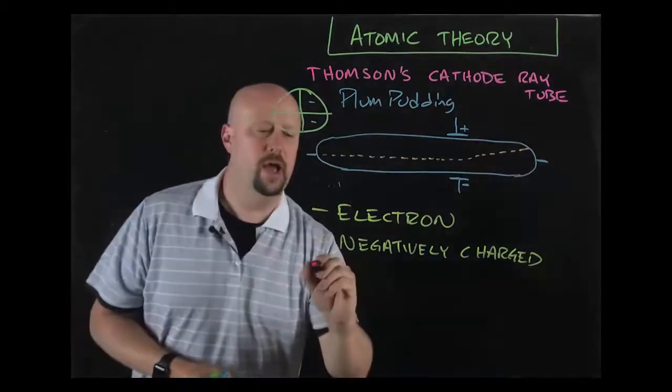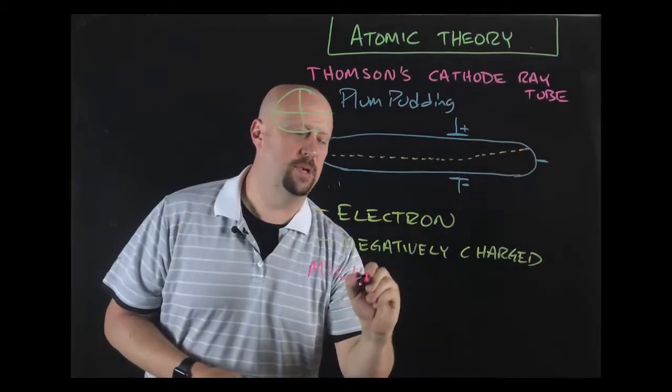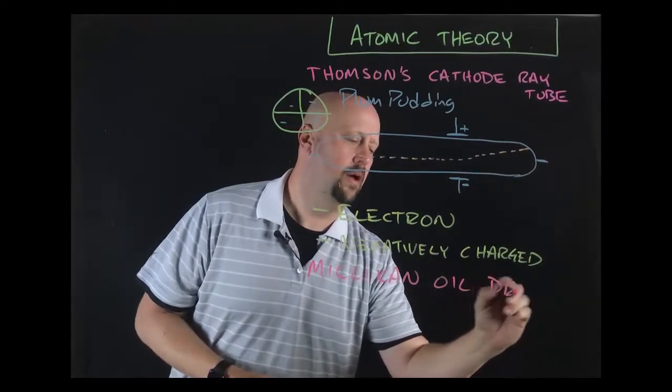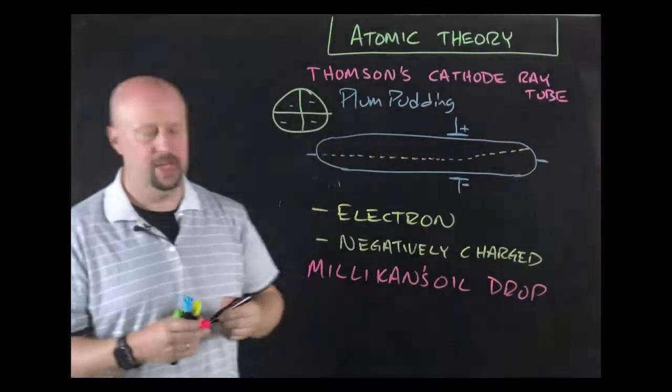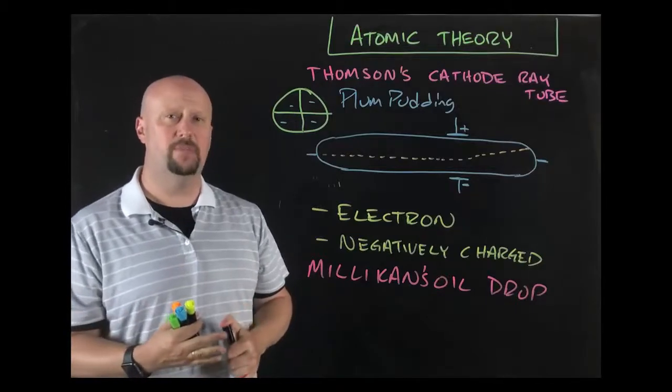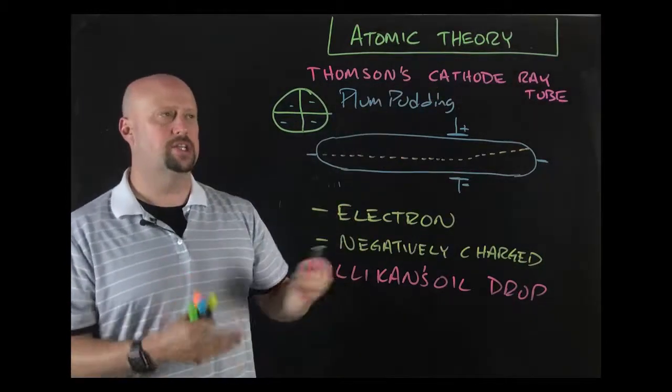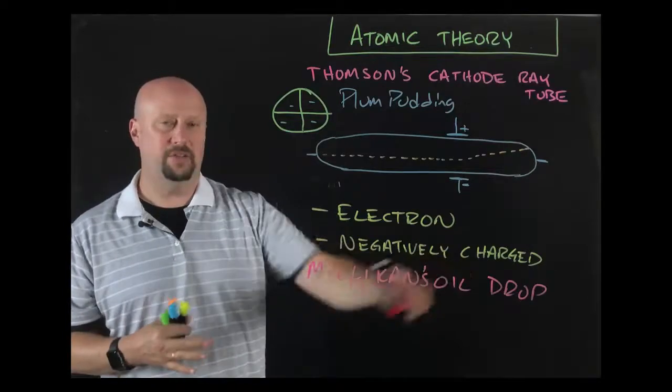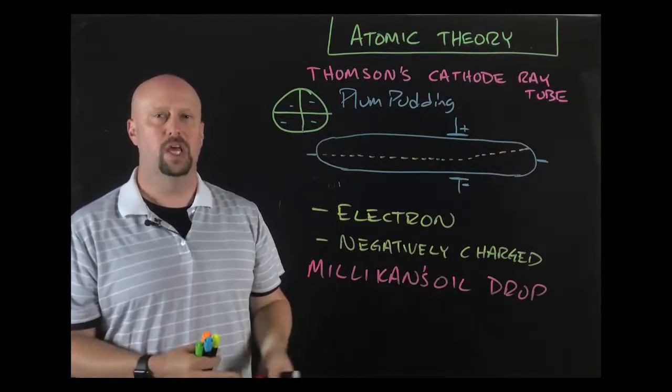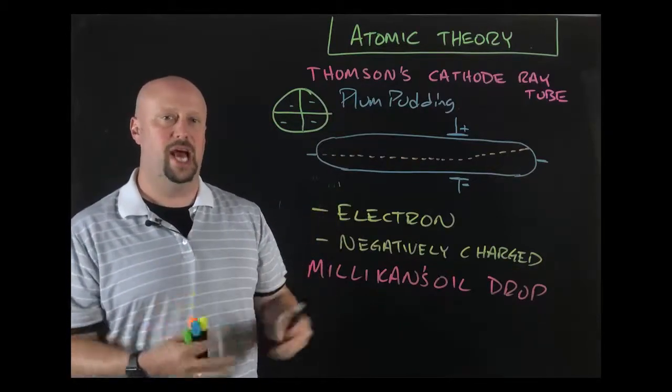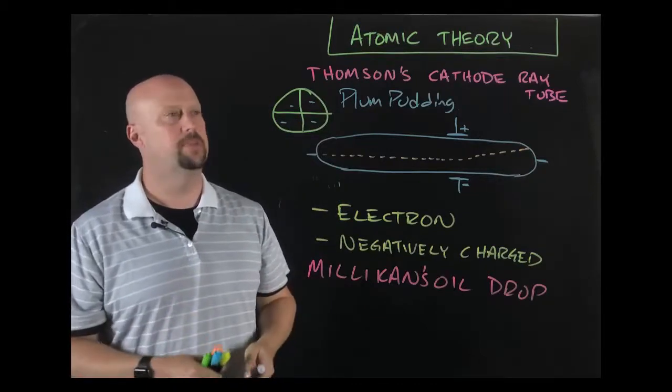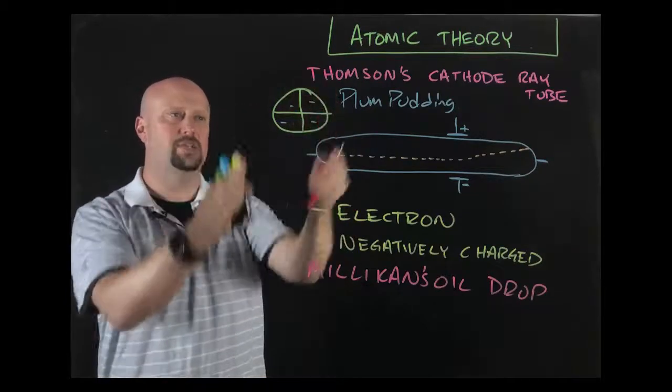It's followed up by Millikan's oil drop experiment. In Millikan's oil drop experiment, Millikan absolutely determines the actual charge of an electron. Since Thompson had already discovered the charge to mass ratio, then after Millikan's experiment, they knew the actual mass of an electron. They knew that mass was smaller than any atom. All of this together says we can break down an atom into smaller parts.